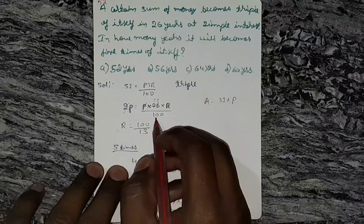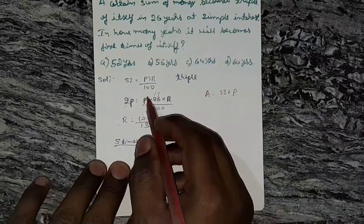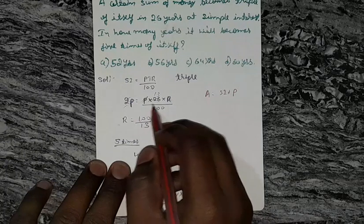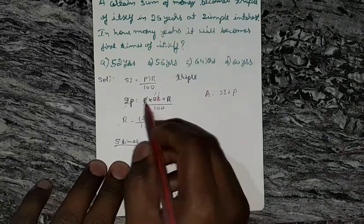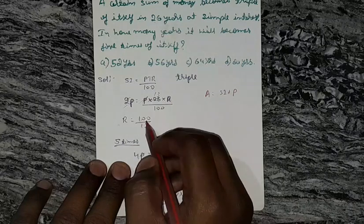So P and P get cancelled, and 2 and 12 become 13, and our rate will be 100 divided by 13. Rate will be 100 divided by 13.